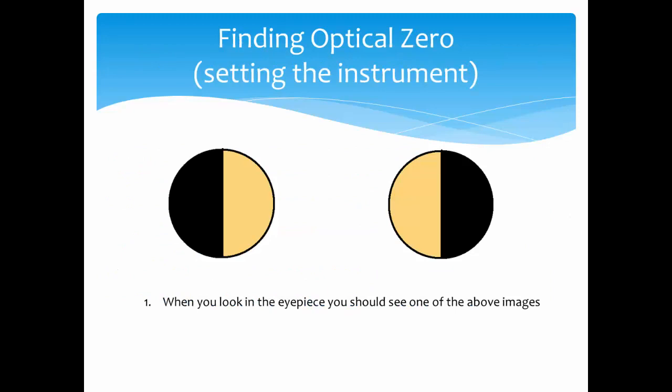In order to get a measurement, you must first find optical zero. To do this, look into the eyepiece once the tube is in the instrument. You should see one of the above images, either a black stripe in a light circle or a light line in a black circle.